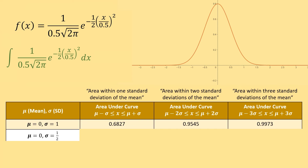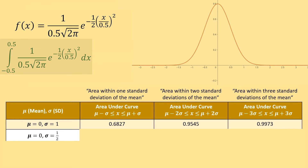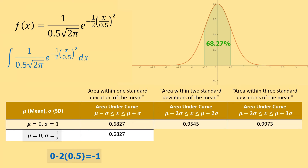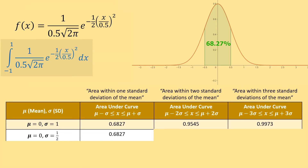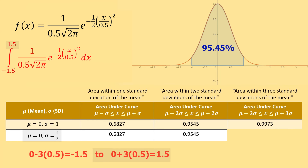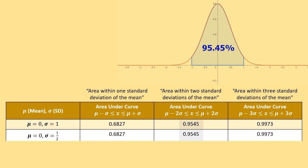For the distribution with mean zero and SD one half, the first standard deviation goes from negative one half to positive one half. Integrating from negative one half to positive one half gives 0.6827. Going out two standard deviations — from negative one to positive one — gives 0.9545. And going out three standard deviations — from negative 1.5 to positive 1.5 — gives 0.9973. Notice these all agree within each standard deviation of the mean.